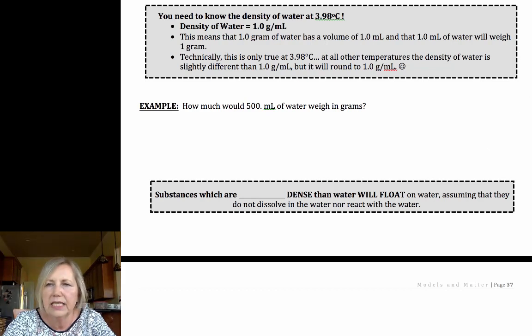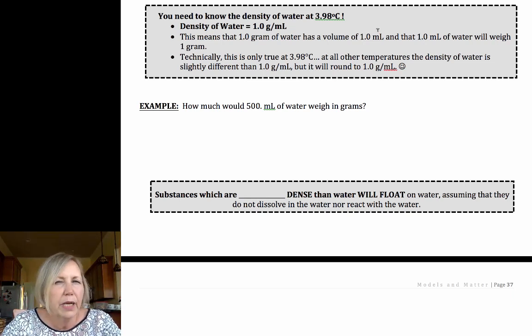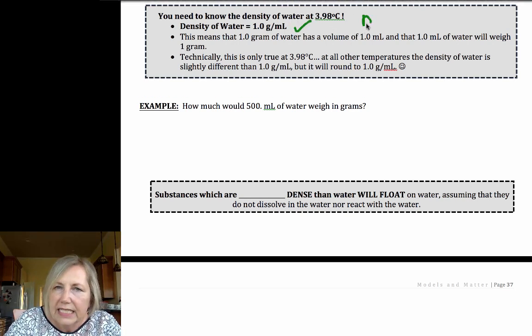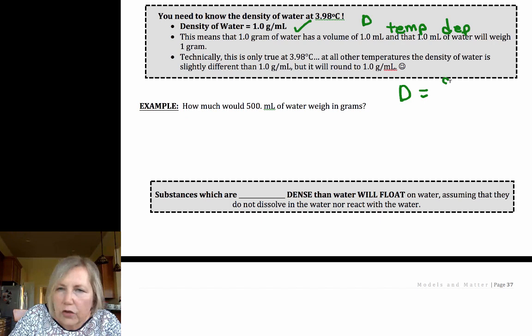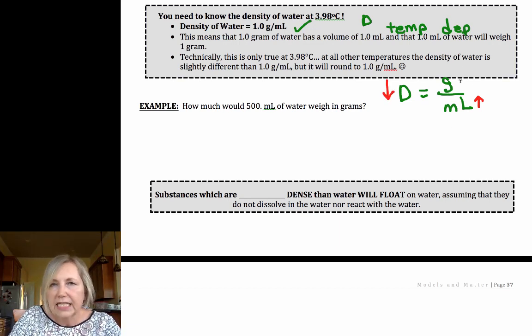A couple of other things about density that are important to know, and that's the density of water. It's pretty much expected by most people, most teachers, most professors that you memorize the density of water. Now density is temperature dependent, right? Density is grams per milliliters. If you increase a temperature, you increase the volume and therefore you decrease your density. So density is temperature dependent, but it's a very slight change with water. And so it's not unusual for teachers and professors to say, assume that it's 1.0 grams per milliliter unless you're told otherwise.